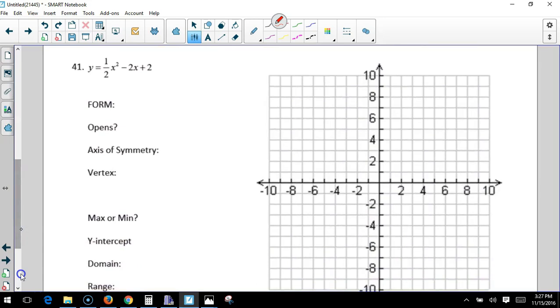Again, 41. This is standard form. It is also opening up. My A is 1 half, my B is negative 2, my C is 2.